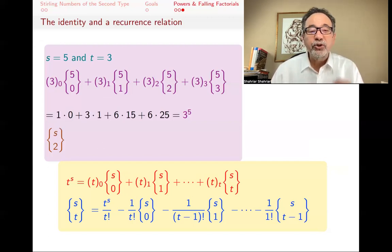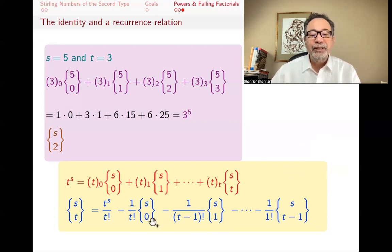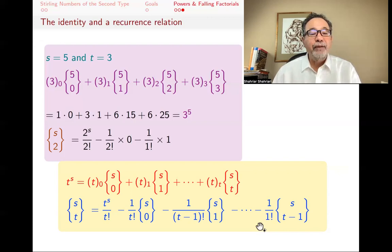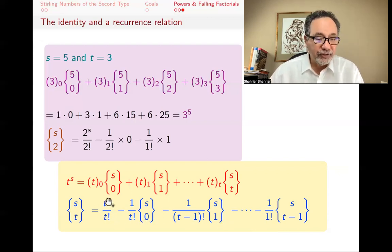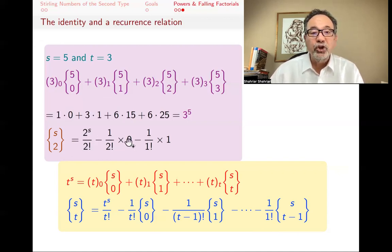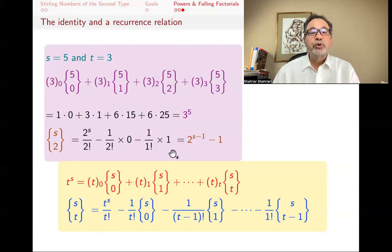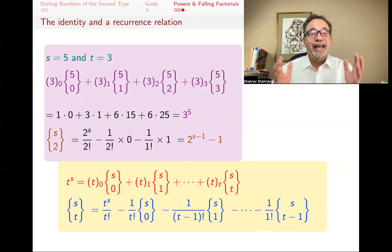Using this recurrence for small values of t, we can find closed formulas. For example, when t equals 2 there are only three terms in the sum, and since s brace 0 is 0 for positive s, we get: s brace 2 equals 2^s over 2 minus 1 over 1, which simplifies to 2^(s−1) − 1 for s greater than or equal to 1.